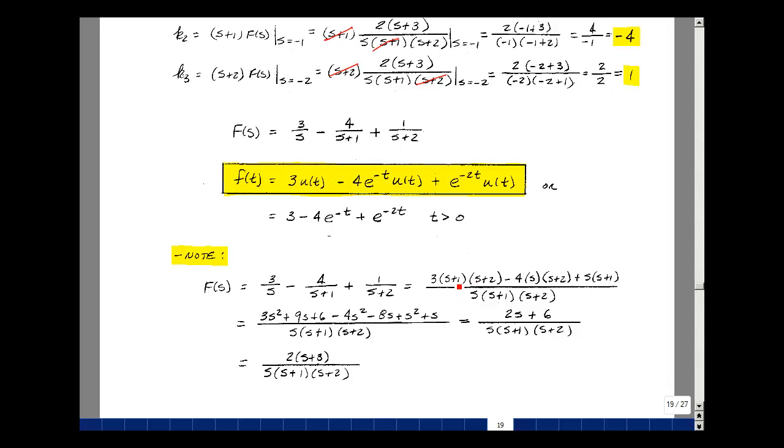Multiplying this out, I've got 3s^2, plus 3(s+2s) which equals 9s, plus 3(2) which is 6. Then -4s^2 and -4s(2) or -8s. And lastly s^2 + s. Some terms cancel. I've got 3s^2 - 4s^2 + s^2, so these cancel.